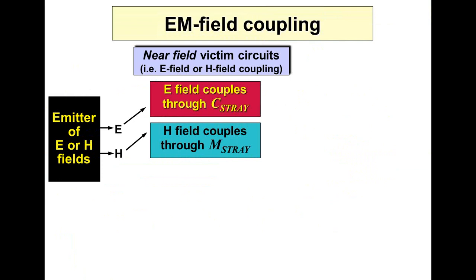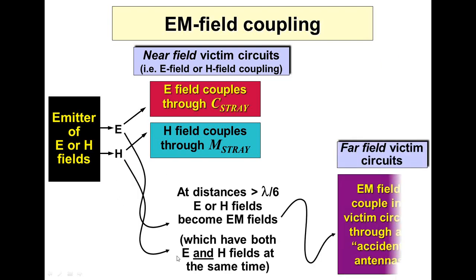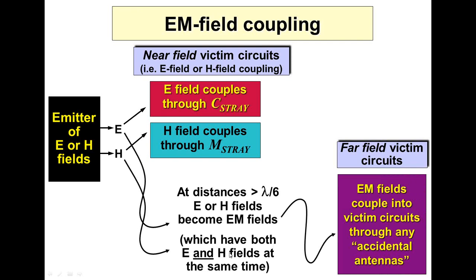Our final coupling type is electromagnetic field coupling — some people think this is a bit of a cheat. It's really just the difference between near field and far field. In the near field, we get coupling through stray capacitance from electric field sources and fluctuating voltages, and coupling through stray inductance from magnetic field sources and fluctuating currents. In the far field, these fluctuating voltages and currents turn into plane waves — electromagnetic fields with electric and magnetic components. It doesn't matter if we started off with a dV/dt — we can pick it up in the far field as flux coupling from the magnetic field component. Electromagnetic field coupling is just electric and magnetic field coupling in the far field.